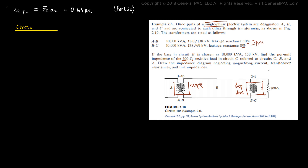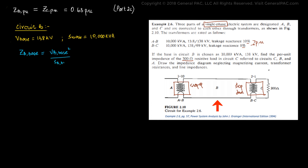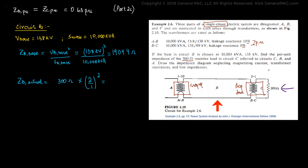We find the base impedance in circuit B by taking 138 kV as the base voltage and 10,000 kVA as the base power: 138 kV squared over 10,000 kVA gives us 1904.4 ohms. To find the actual impedance in circuit B, we multiply the circuit C load by the square of the turns ratio of 2-to-1. So ZB actual equals 300 ohms times (2/1) squared, which gives us 1200 ohms. That is the actual impedance of the 300 ohm load in circuit C reflected onto circuit B.